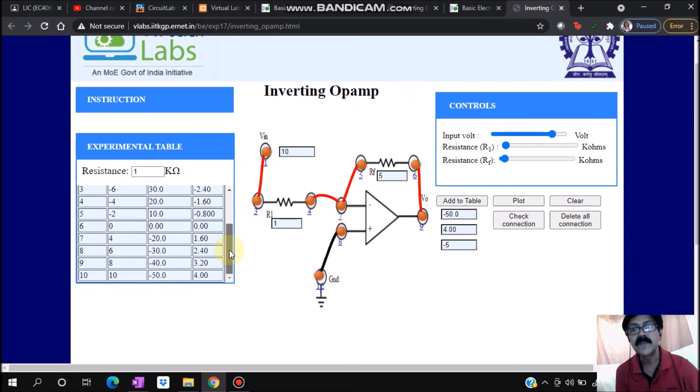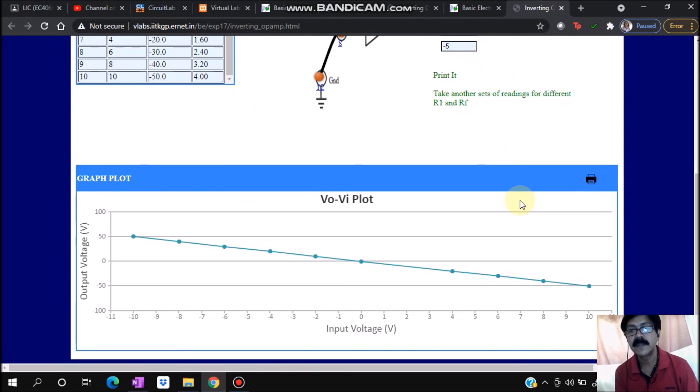There is one more option: you can plot this and see the linearity. See the plot - it is showing a linear relationship. As it is negative, the slope is negative. For this negative voltage I'm getting positive voltage, and for this positive voltage I'm getting negative voltage.